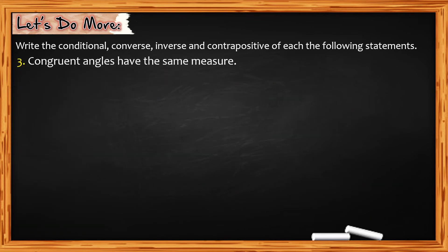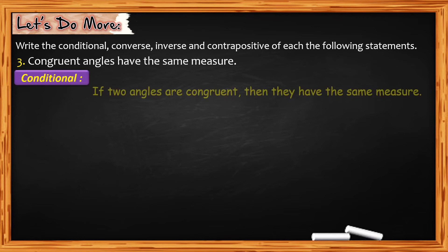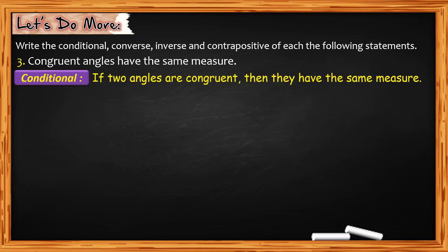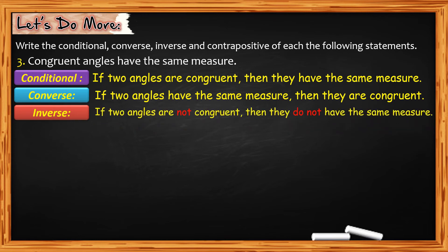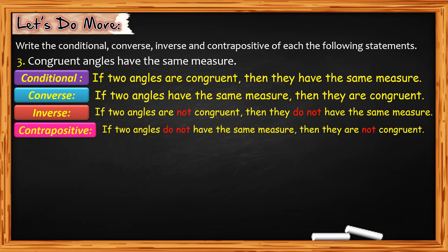For number 3: congruent angles have the same measure. For the conditional: if two angles are congruent, then they have the same measure. For the converse: if two angles have the same measure, then they are congruent. For the inverse: if two angles are not congruent, then they do not have the same measure. For the contrapositive: if two angles do not have the same measure, then they are not congruent.